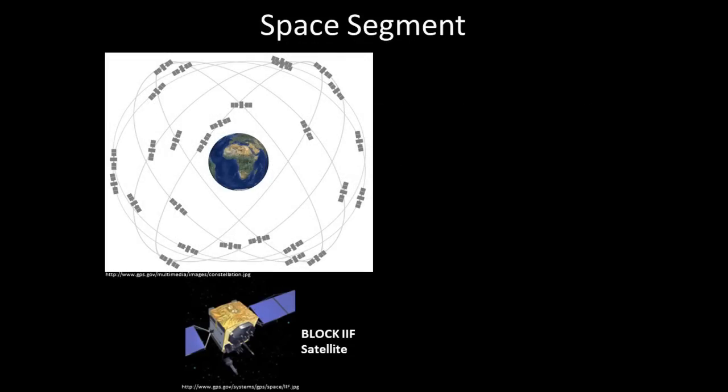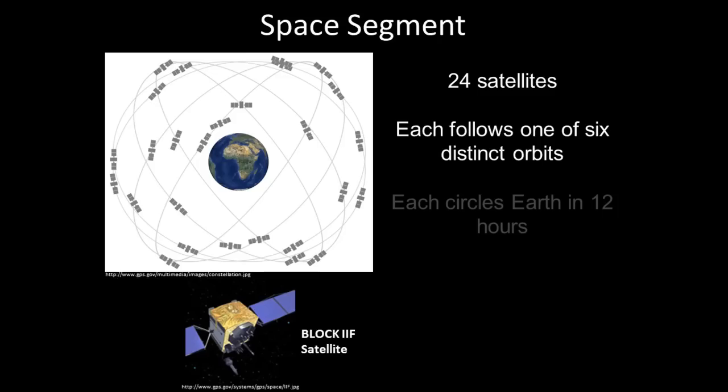The space segment is a constellation of at least 24 satellites. Each satellite follows one of six distinct orbits around the Earth. Each satellite circles the Earth in 12 hours, thus ensuring the satellites are visible at any time, anywhere on the Earth. And the satellites are continually broadcasting codes to GPS receivers, a topic I will discuss shortly.